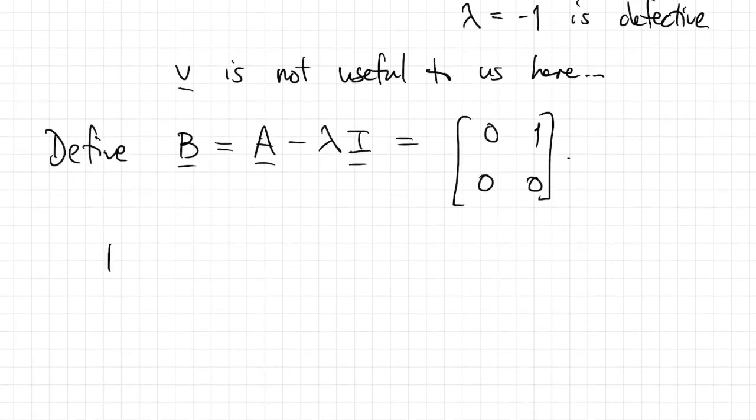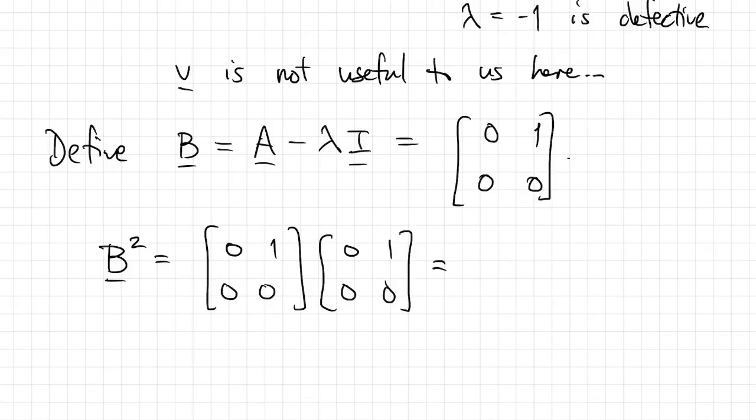Now we'll define B to be this matrix A minus lambda I, which is the one I had written down up there. And if we take B times itself, we work out very quickly. Right? The 1,1 position is 0 plus 0. The 1,2 position is 0 plus 0. They're all 0. So B squared is the 0 matrix.